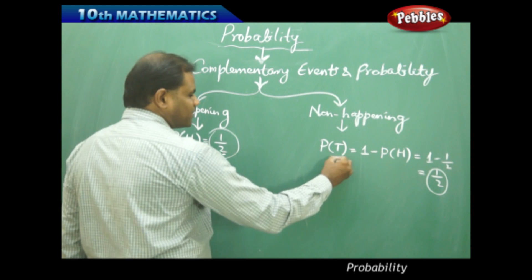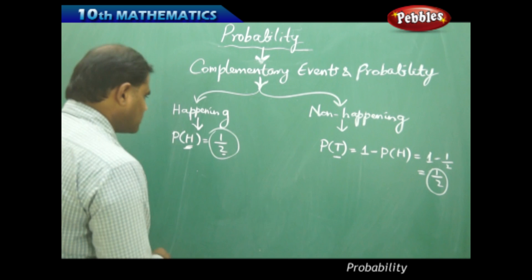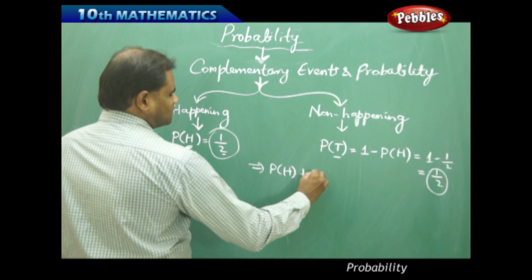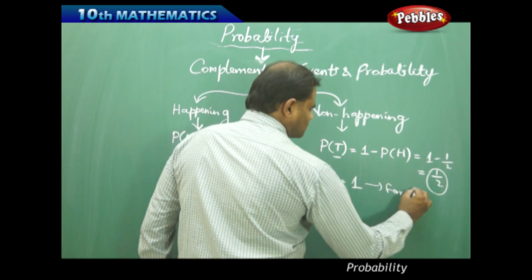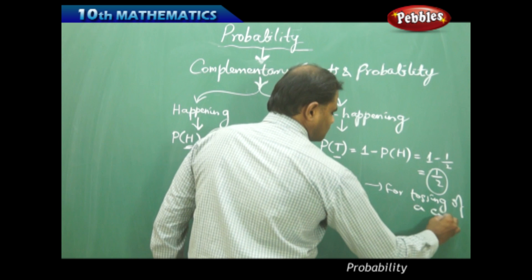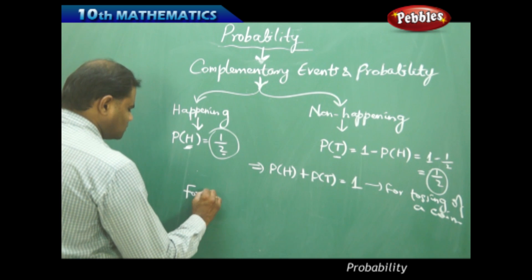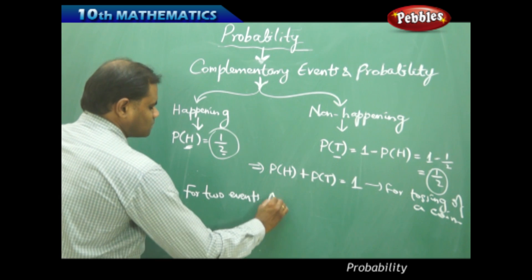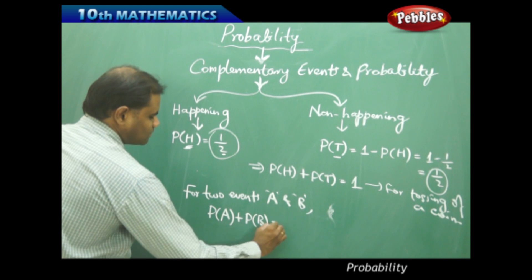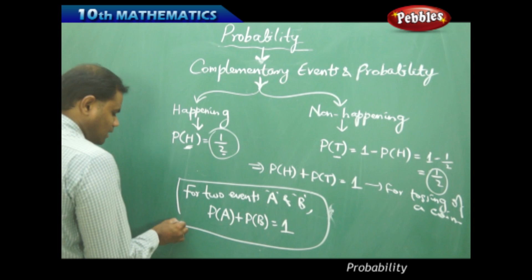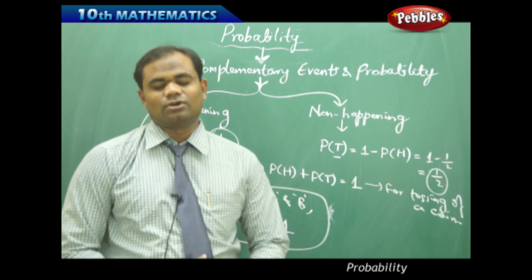These two are complementary events. Therefore, if A and B are complementary events, then probability of A plus probability of B equals 1. This implies that P(H) plus P(T) equals 1 in the case of tossing a coin. For any two events A and B, if P(A) plus P(B) equals 1, then A and B are said to be complementary events. So for complementary events, P(A) plus P(B) is always equal to 1.